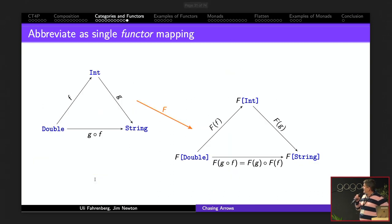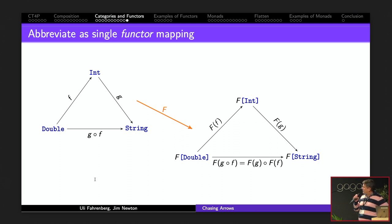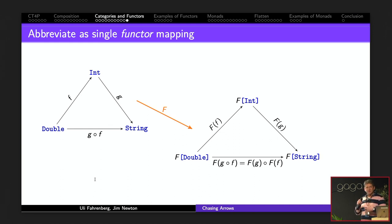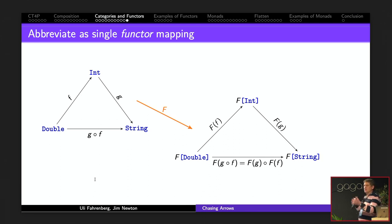We abbreviate the functor as F. In category theory, this single F encompasses the mapping of types to types, the mapping of morphisms to morphisms, and the fact that composition in the pre-image and post-image categories are identical.